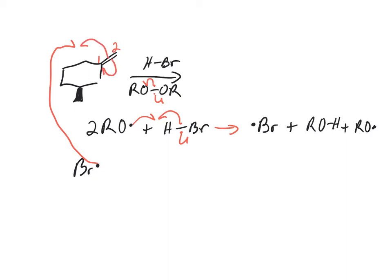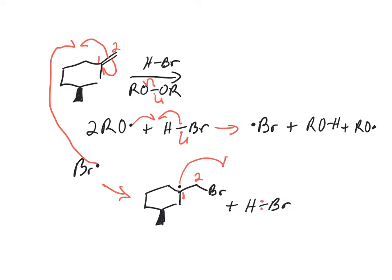The other electron from the pi bond goes to carbon 1. But we're not going to stop here — we need to get rid of that radical. So using more HBr in the system, we need to get that H to carbon 1.